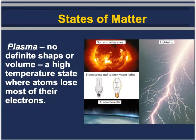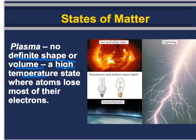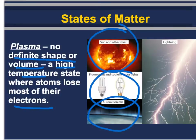One type of matter you may not be familiar with is plasma. Plasma has no definite shape or volume, and it has a high temperature where atoms lose their electrons, which changes the properties that the plasma presents. The sun and other stars are made of plasma. We have plasma in our lights, plasma helps create the aurora borealis — the northern lights — and we've got plasma in lightning. So while we might not talk about plasma often, we see it all the time.